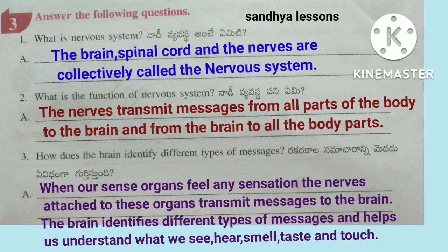Third question: How does the brain identify different types of messages? When our sense organs feel any sensation, the nerves attached to these organs transmit messages to the brain. The brain identifies different types of messages and helps us understand what we see, hear, smell, taste, and touch.